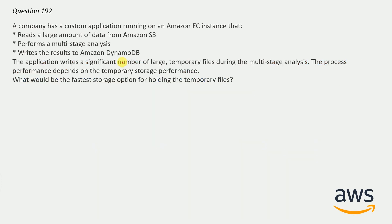Question number 192: A company has a custom application running on an Amazon EC2 instance that reads a large amount of data from Amazon S3, performs a multi-stage analysis, and writes the result to Amazon DynamoDB. The application writes a significant number of large temporary files during the multi-stage analysis, and the process performance depends on the temporary storage performance. What would be the fastest storage option for holding the temporary files?